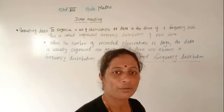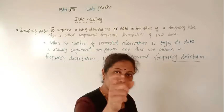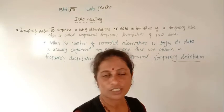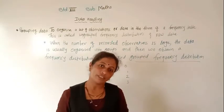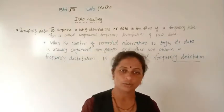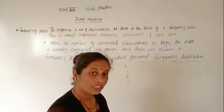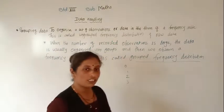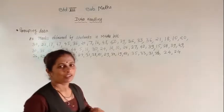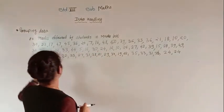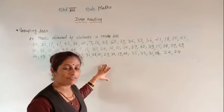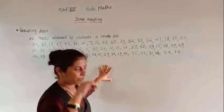We arrange the marks into groups: 0 to 10, 10 to 20, 20 to 30, 30 to 40, and 40 to 50. Total marks are 50, so we make these 5 groups. Each group is called a class — for example, 0 to 10 is one class, 10 to 20 is another class. We will see how to make the group frequency distribution table.